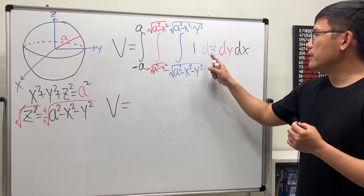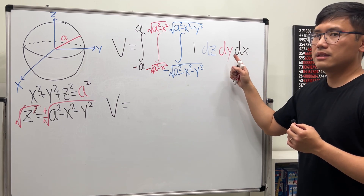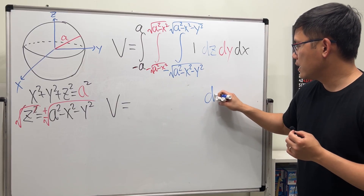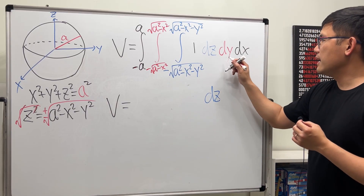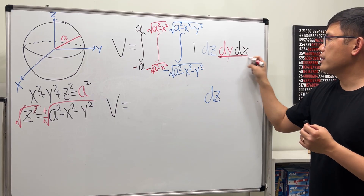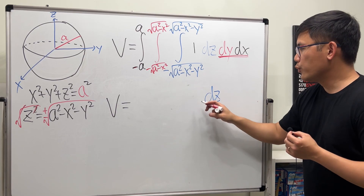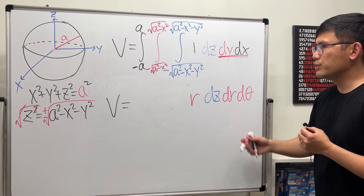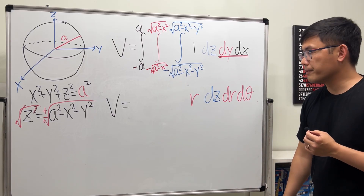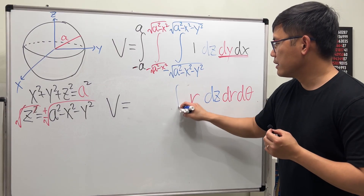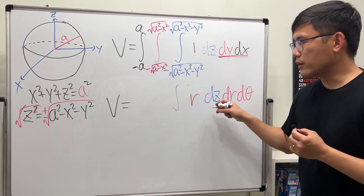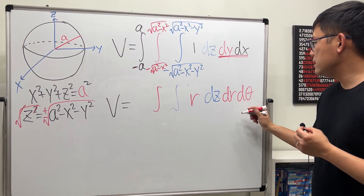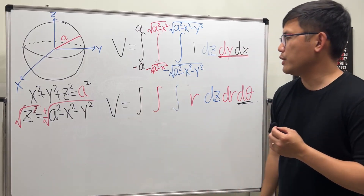Now let's talk about how the cylindrical system can help. For the cylindrical system, dz stays the same, but dy dx changes to polar, which gives us r dr dθ. So the order will be dz, then dr, then dθ on the very outside.